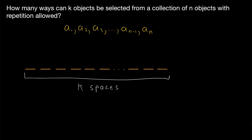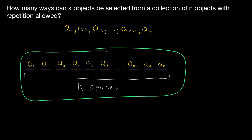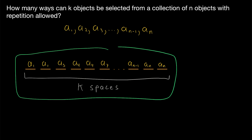Since order doesn't matter, I'll list the objects in the most convenient order. If I selected any a1s, I'll put the a1s first, then the a2s, a3s, and so on. So here I've written out all k objects I selected. You can see I selected two a1s, one a3, two a4s, and so on. This describes one of the many ways that I could select k objects from our collection of n objects with repetition allowed.